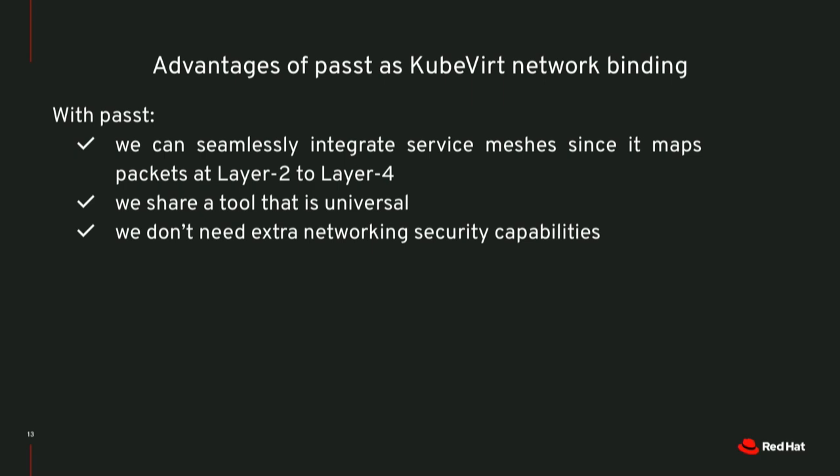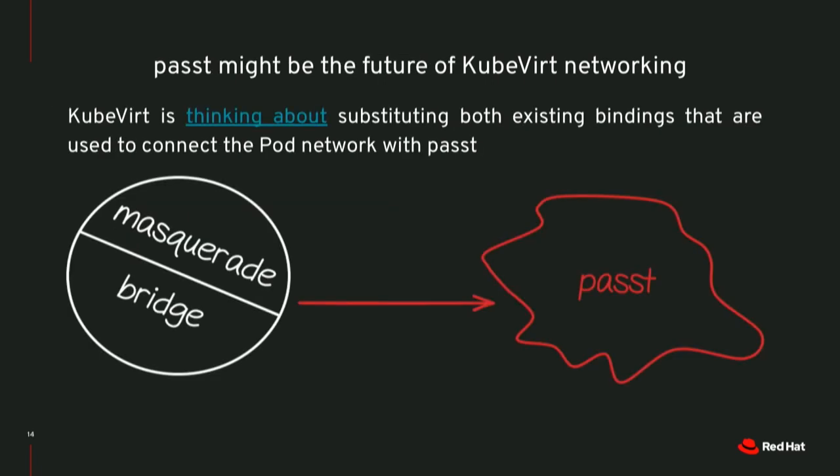The advantages of Passt: first, we have seamless integration with service mesh because all its assumptions are met. We also share a universal tool — KubeVirt doesn't have to implement it from scratch. It will be in the future part of QEMU and libvirt. Additionally, it doesn't require extra network security capabilities — CAP_NET_ADMIN and CAP_NET_RAW are not required. Passt is already supported by KubeVirt, and in the future we are thinking of even replacing our existing masquerade and bridge bindings with Passt.